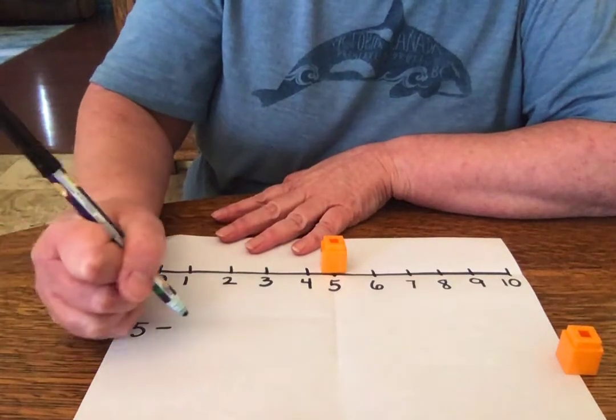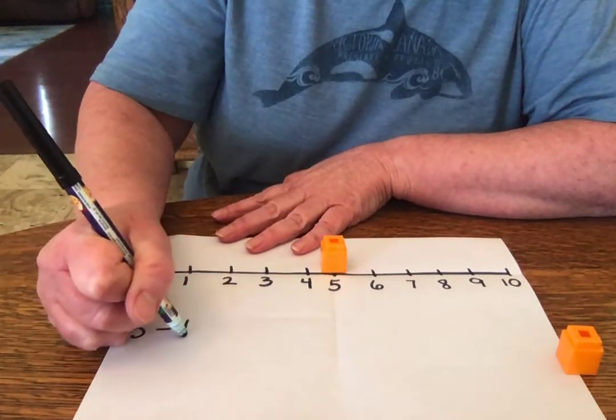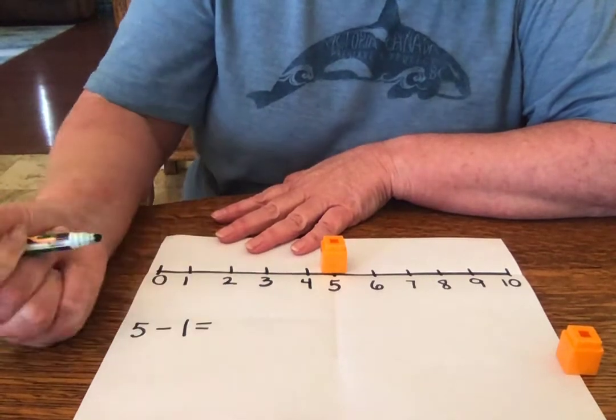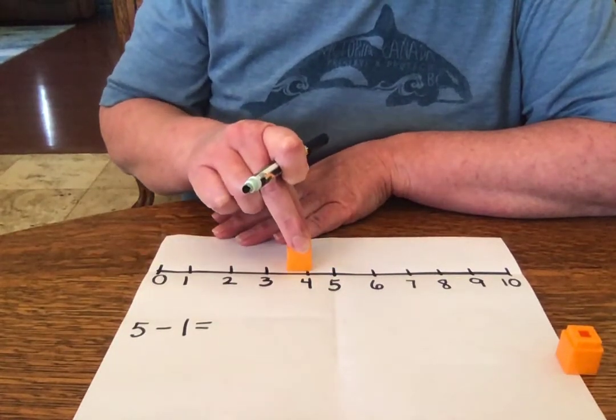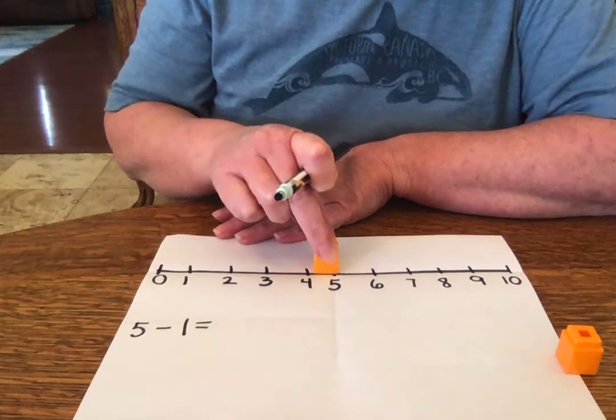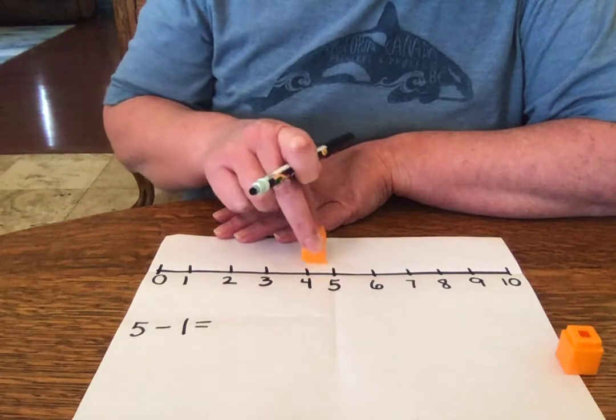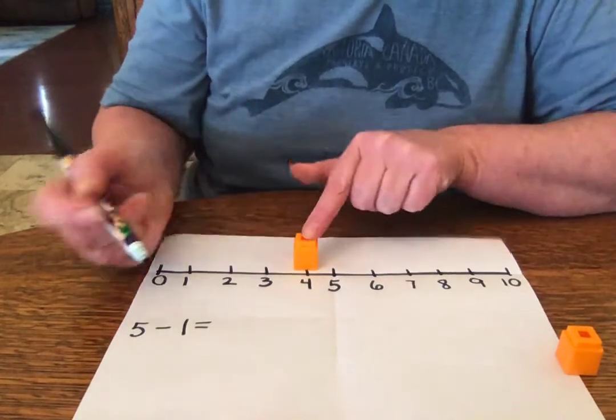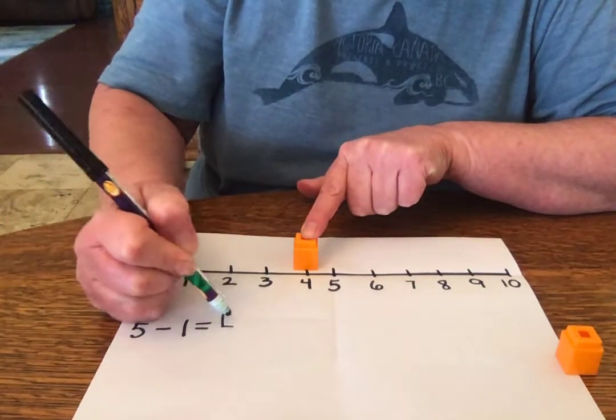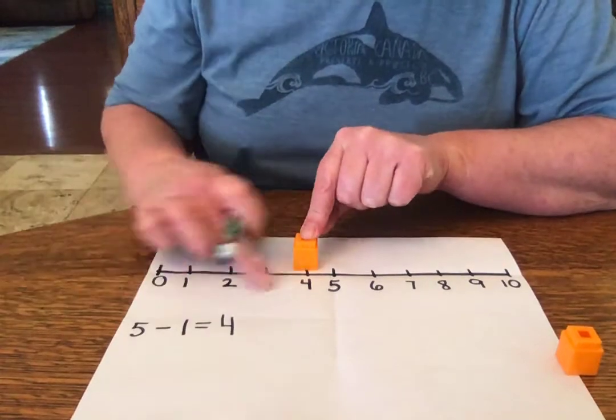Let's say we just subtract 1. So my marker is going to jump backwards, right? Towards 0, we're going towards 0 because we're subtracting. So we start at 5 and we jump 1. We land on 4. Pretty easy, huh?